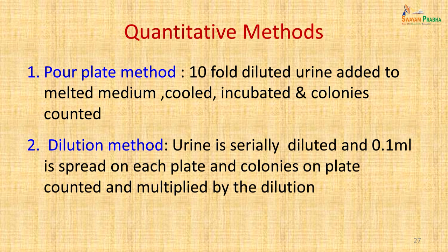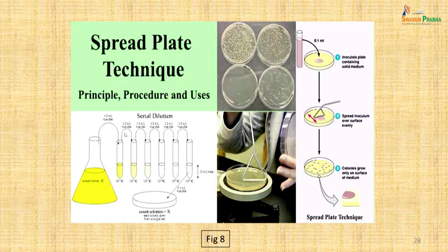More accurate urine counts can be done by quantitative methods such as the pour plate method, where ten-fold dilutions of urine are added to melted medium, cooled, incubated and counted the next day. In the dilution method, urine is serially diluted and 0.1 ml spread on each plate; colonies are counted and multiplied by the dilution factor. These quantitative techniques are more tedious and are often reserved for research, while semi-quantitative techniques are used for routine laboratory work.